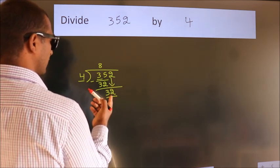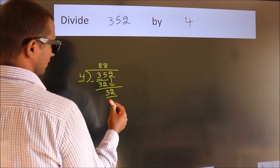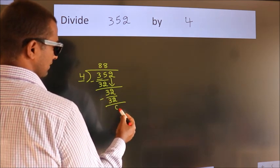When do we get 32? In the 4 table: 4, 8, 32. Now we subtract. We get 0.